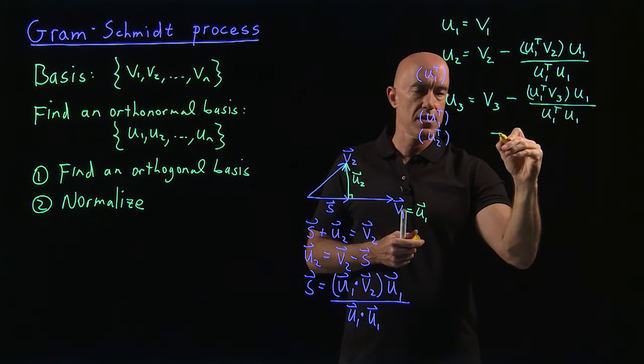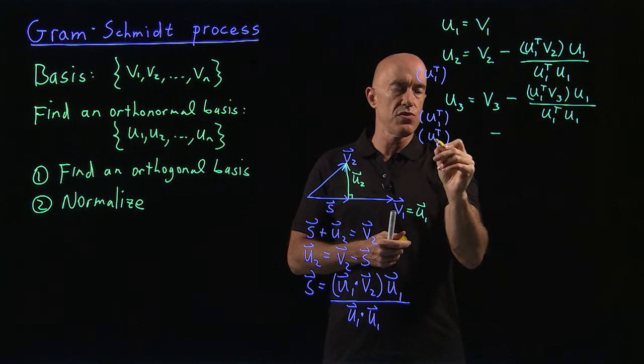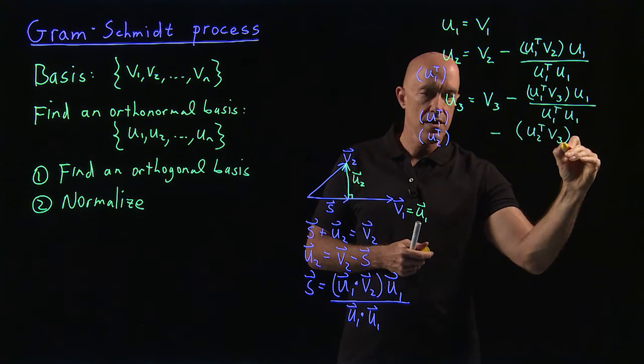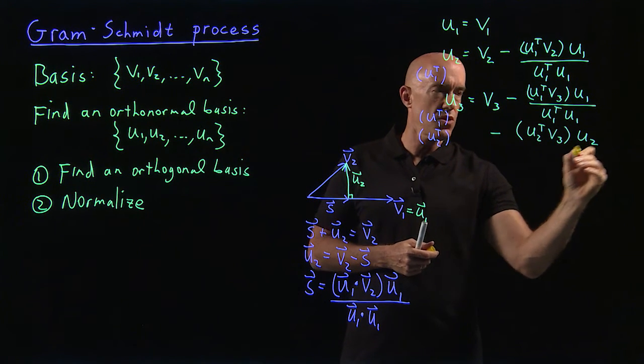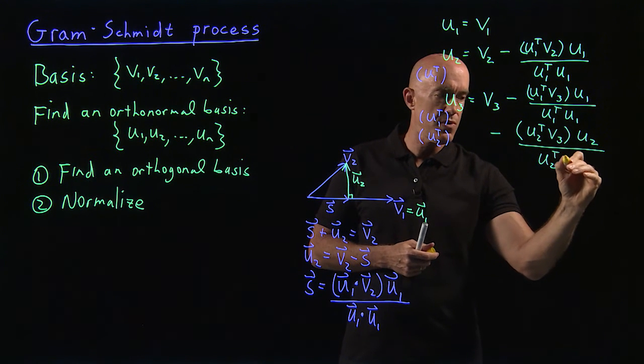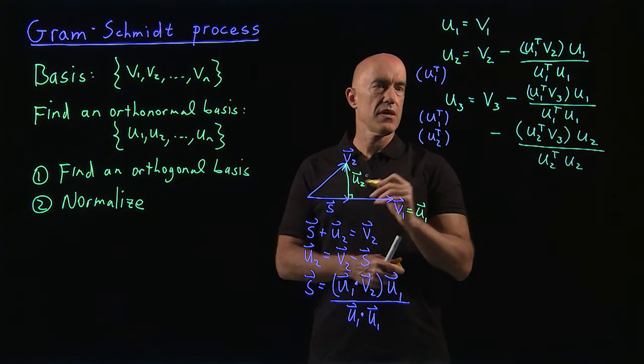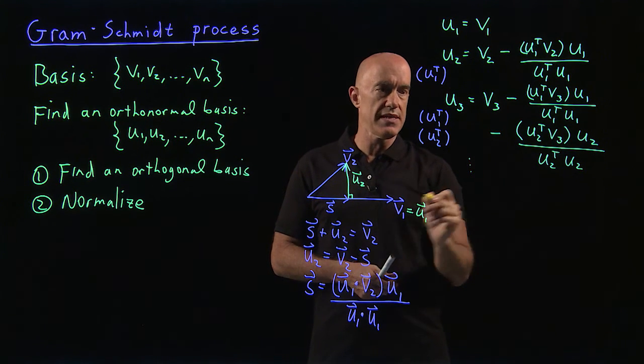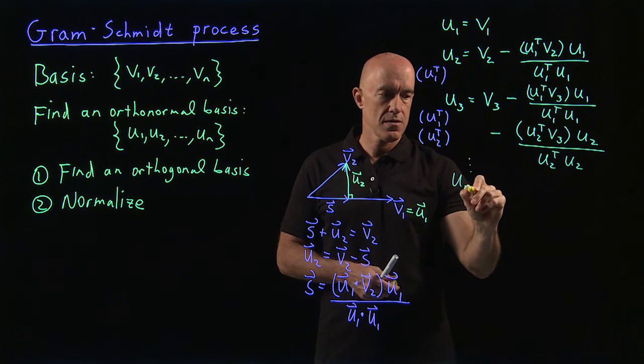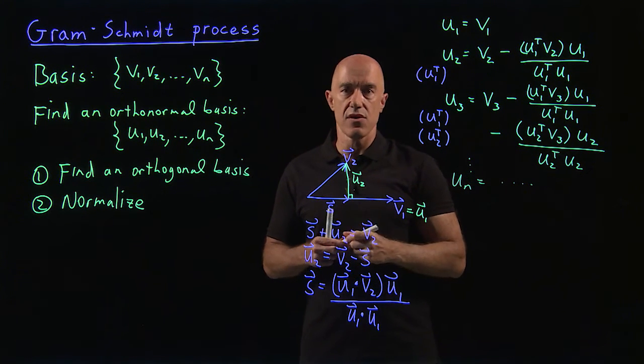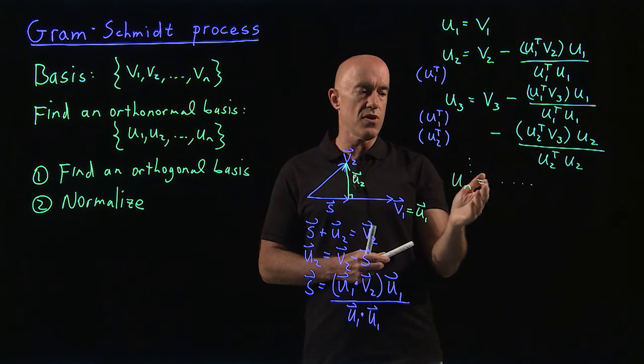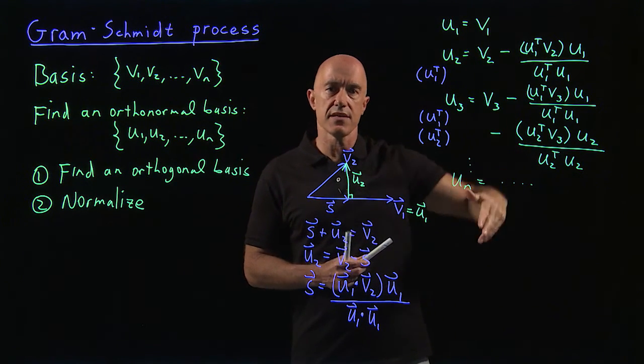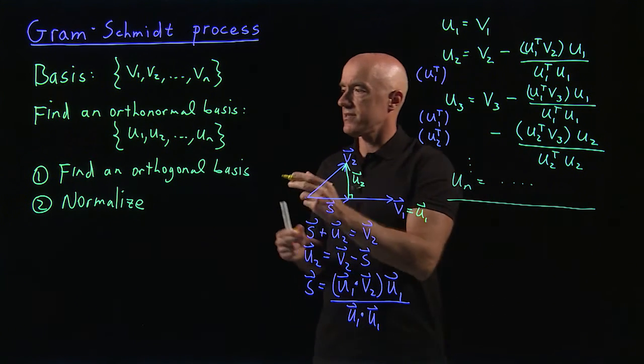So we need a U2 transpose multiply on the left here. And then we need to subtract. Here we would be U2 transpose V3. So we need to subtract U2 U2 transpose V3. And then we go into U2. It's along U2. And then we divide by U2 transpose U2. So that gives us a third orthogonal vector. And then we just keep going down until we get to the last one. So you can imagine that there are all the terms here so that we force UN to be orthogonal to all the previous U's. That's how the process works.